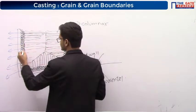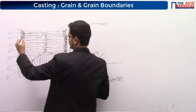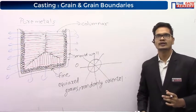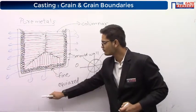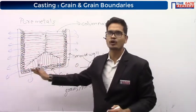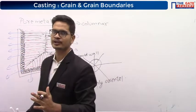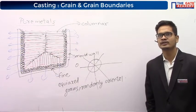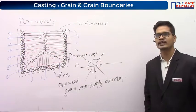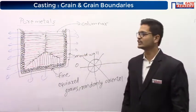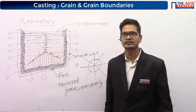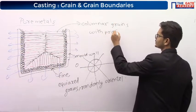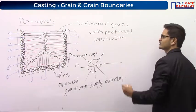This is for pure metals. If I ask you, what kind of grains are formed in pure metals near the mold wall? The answer is fine, equiaxed, and randomly oriented. And what kind of grains are formed in pure metal towards the center? Columnar grains are formed there — with a particular preferred orientation.